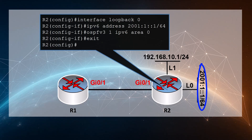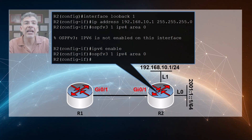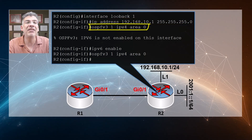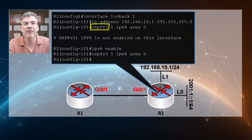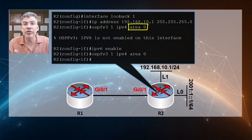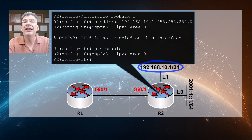Now let's configure our loopback 1 interface with an IPv4 address space. We create the loopback interface and assign it an IPv4 address as normal. Then we issue the 'ospfv3 1 ipv4 area 0' command. This tells the router that this interface will participate in OSPF version 3 with process ID 1 using the IPv4 address family, placed in area 0, and the associated subnet will be advertised using OSPF version 3. But there's a problem.